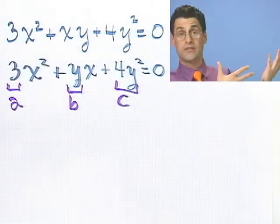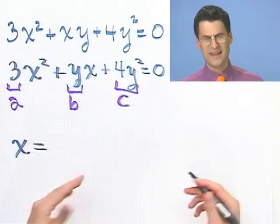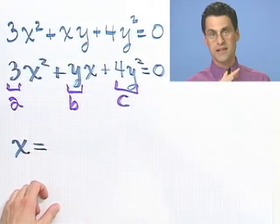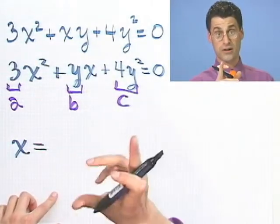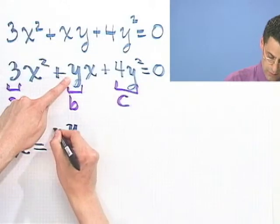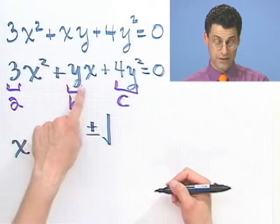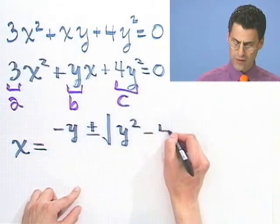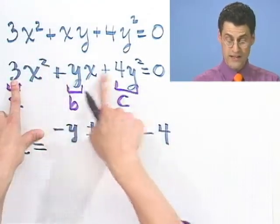Armed with this, all I'm going to do is plug it into the quadratic formula. So x equals negative B — which is negative y — plus or minus the square root of B squared, which is y squared, minus 4 times AC. That's 4 times 3 times 4y².